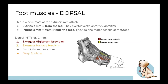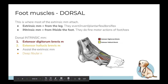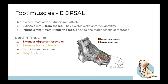There are just two intrinsic dorsal muscles: the extensor digitorum brevis and the extensor hallucis brevis. 'Extensor' because it's on the dorsal side. 'Digitorum' for all toes except the big toe, which is 'hallucis.' 'Brevis' because it originates within the foot rather than up at the top of the tibia like a longus muscle.